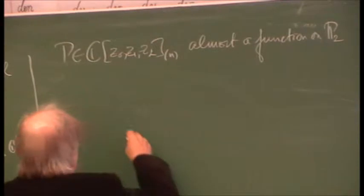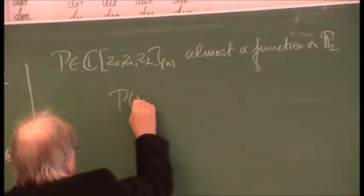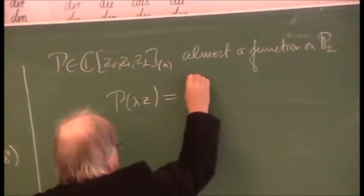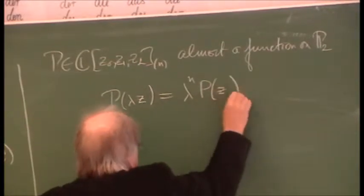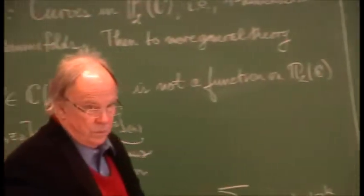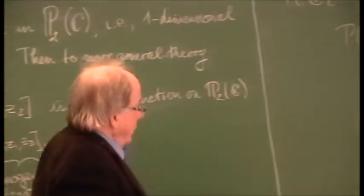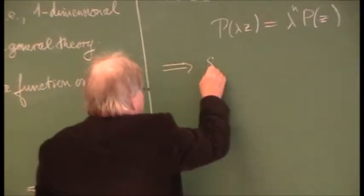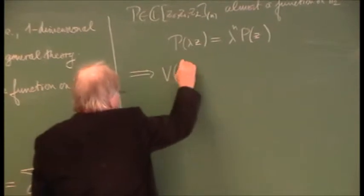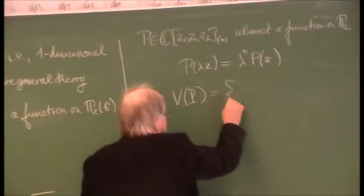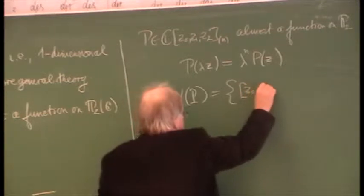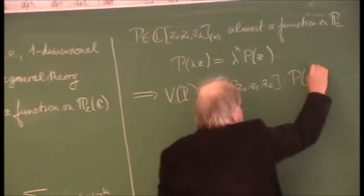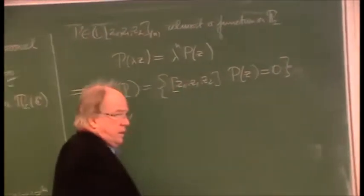What's the point here? If you put in P of a factor times Z, it comes out with the degree of homogeneity. That's good because this means what we call the variety of P — which is where this polynomial vanishes — is a well-defined set.